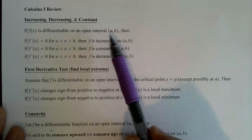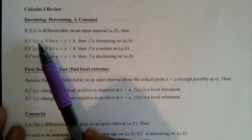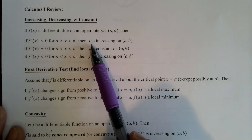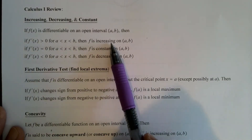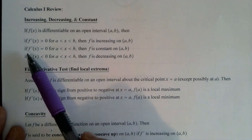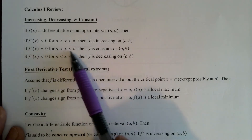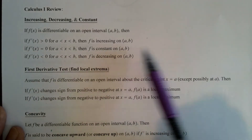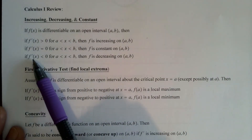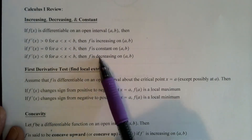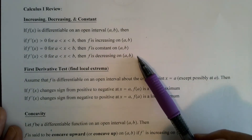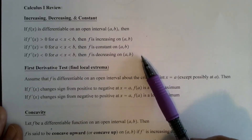If a function is differentiable on an open interval and its derivative is greater than zero or positive on that interval, then the function is increasing on that interval — we're going up as we move from left to right. If the derivative is zero for all values on that interval, the function is constant — just a horizontal line, neither increasing nor decreasing. If f prime of x is less than zero, the function is decreasing, going down as we move left to right.